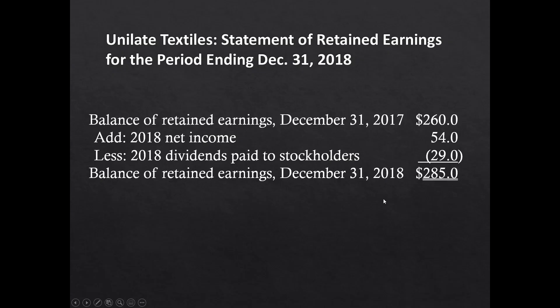The last major financial statement is the statement of retained earnings — the changes in common equity accounts between balance sheet dates. Retained earnings started at $260 million (December 31, 2017), add 2018 net income of $54 million, subtract dividends of $29 million, giving $285 million on the balance sheet. Together, these four major financial statements provide the foundation needed to perform meaningful financial analysis.